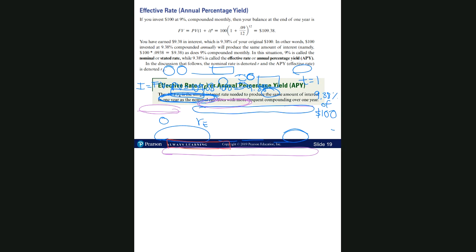The APY, or effective rate, is the simple interest rate needed to produce the same amount of interest in one year as the nominal rate does with more frequent compounding over the year. Simple interest rate is like section 5.1. Since you're compounding more often, the nominal rate is going to be smaller — here we had 9% nominal — and the effective rate or APY was 9.38%.